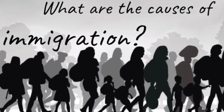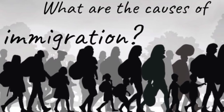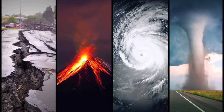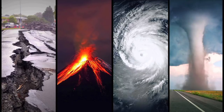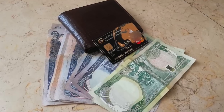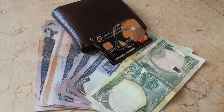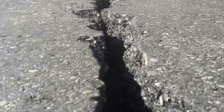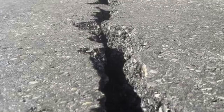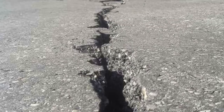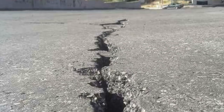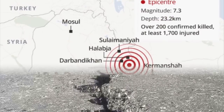What are the causes of immigration? There are many causes. Some of them include natural disasters, economic crisis, war, and many more. One type of natural disaster is earthquake, which can cause deaths as well as displacement and homelessness.